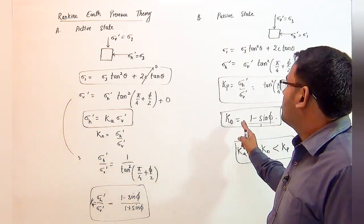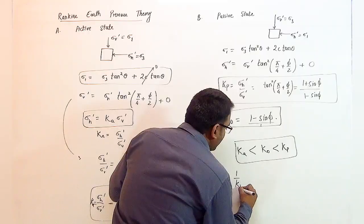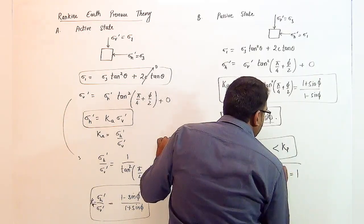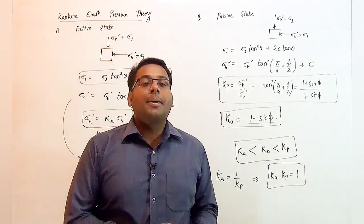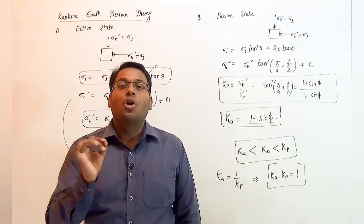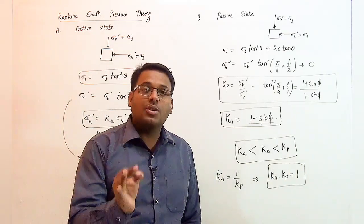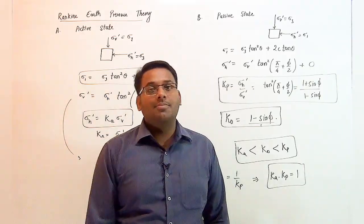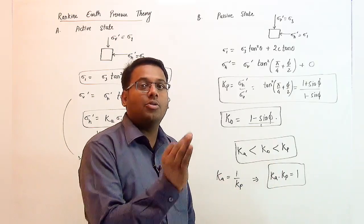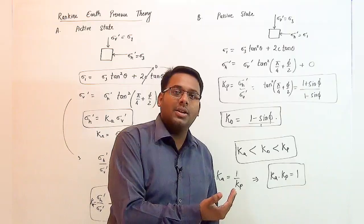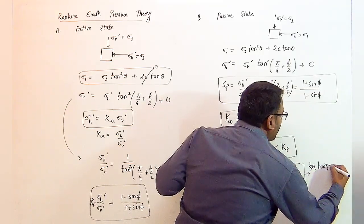From the formulas of Ka and Kp, Kp is the inverse of Ka, meaning Ka × Kp = 1. This is a formula to remember, but with an exception: it is applicable only for a horizontal backfill. If the backfill is inclined by an angle beta, then Ka × Kp = cos²β, not 1. We will study the inclined backfill case in further videos.